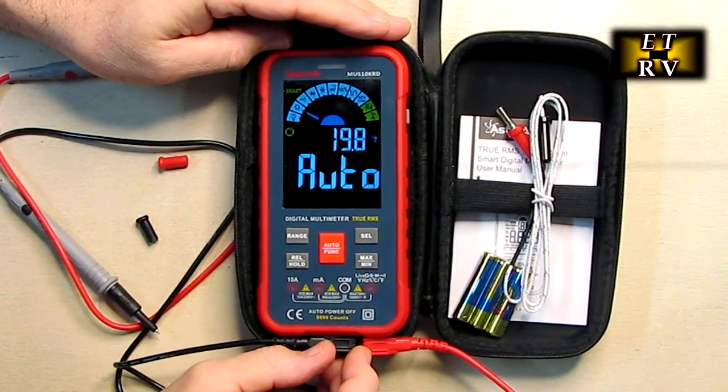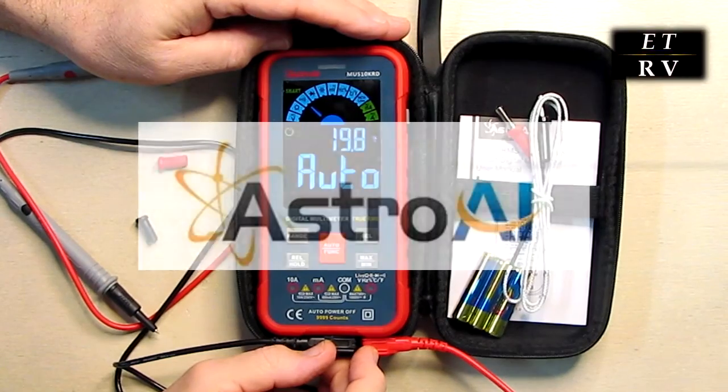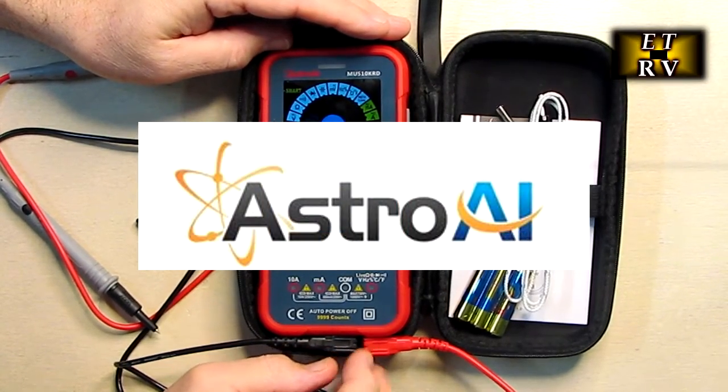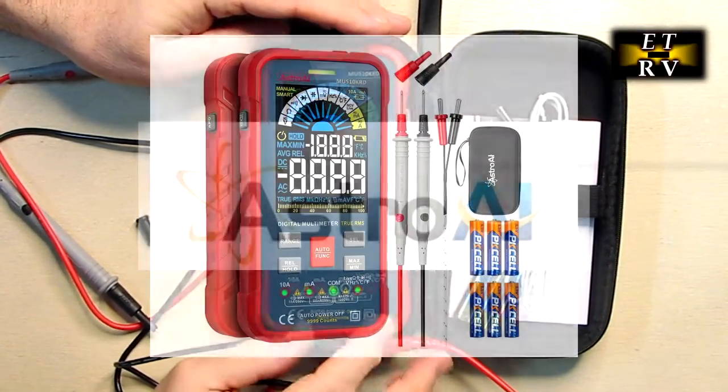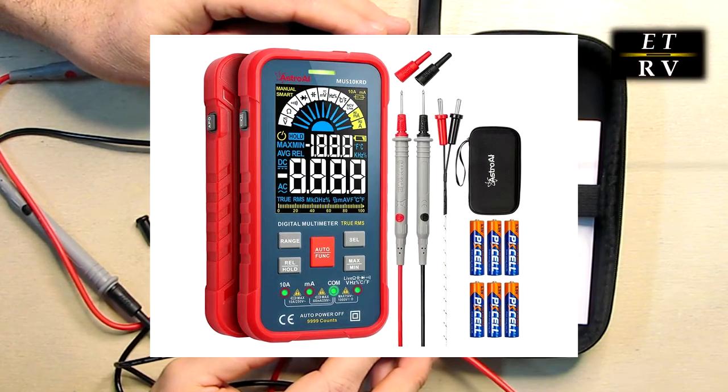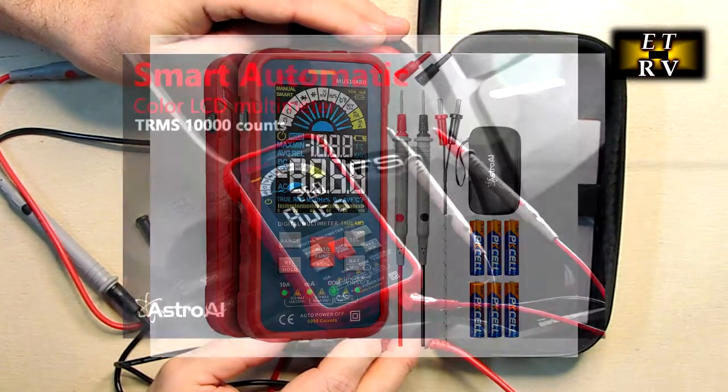Hello again, this is Robert Veach here, and this is my video review of the Astro AI branded Digital Multimeter, the True RMS Auto Ranging Color LCD Voltmeter. This thing just measures a ton of things: voltage,